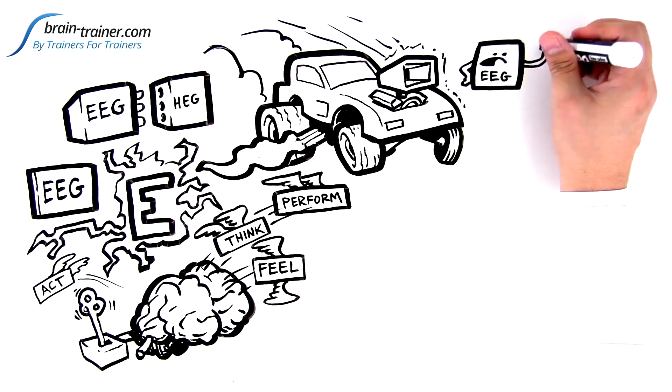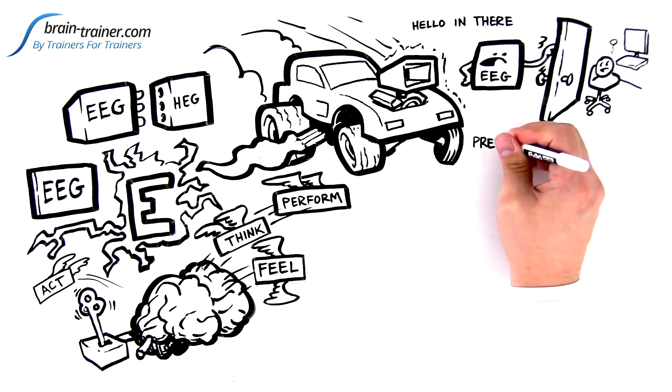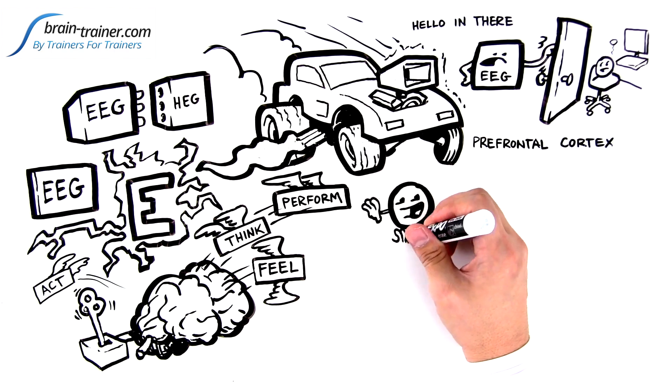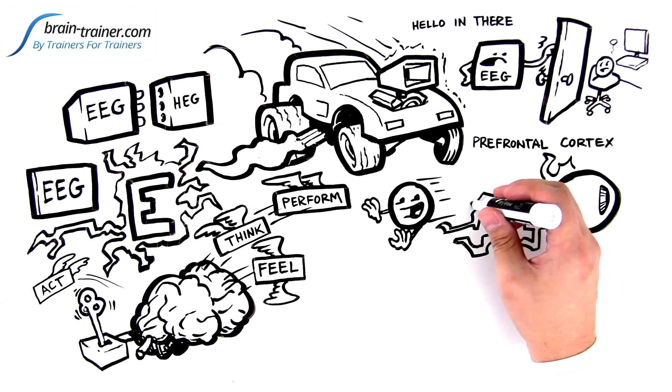Unfortunately, EEG can't train your brain's executive center behind the forehead. It's called the PFC, the prefrontal cortex. Electrical patterns from the PFC are overwhelmed by large electrical signals coming from the eye muscles when you blink or move them.